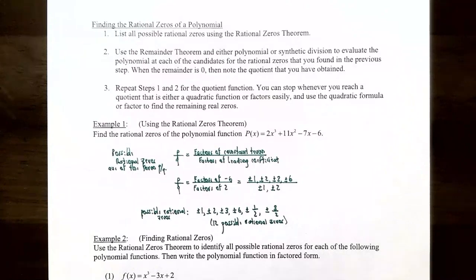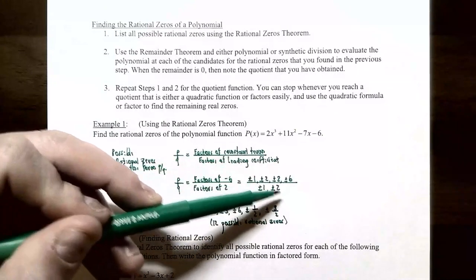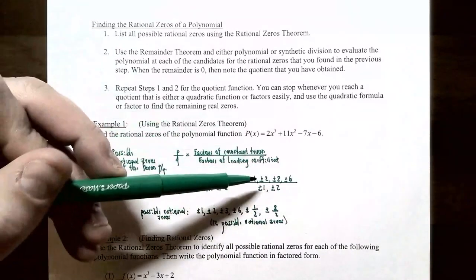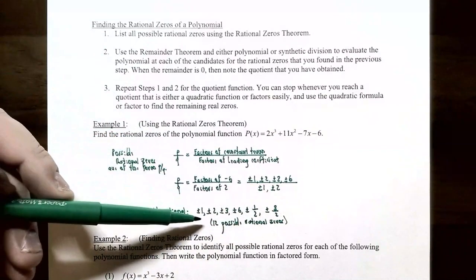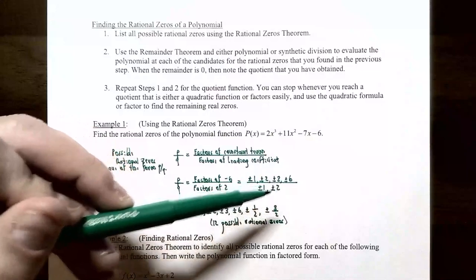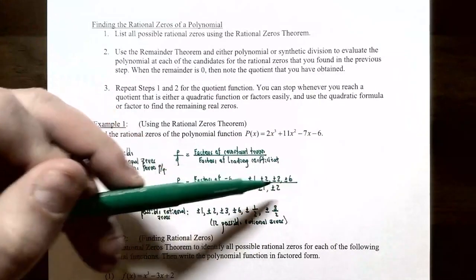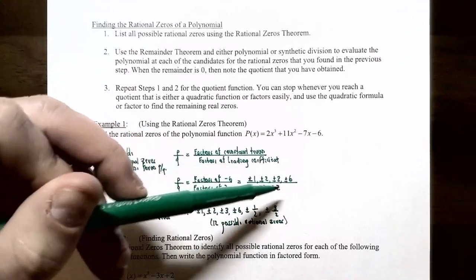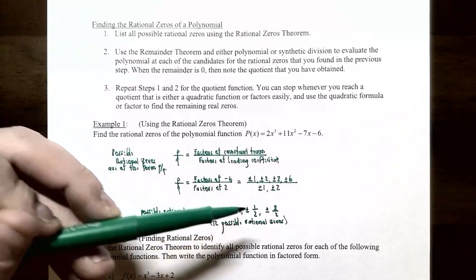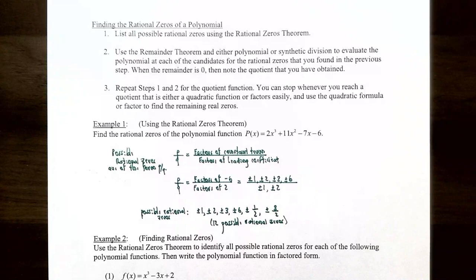Combining these, the possible rational zeros include: ±1/1 = ±1, ±1/2, ±2/1 = ±2, ±2/2 = ±1 (already listed), ±3/1 = ±3, ±3/2, ±6/1 = ±6, and ±6/2 = ±3 (already listed). So there are 12 different possible rational zeros: ±1, ±2, ±3, ±6, ±½, and ±3/2. Any real zeros of this polynomial can only come from this list.